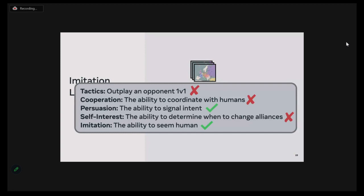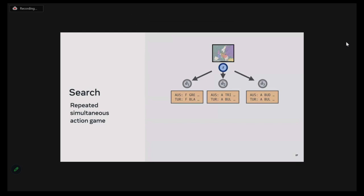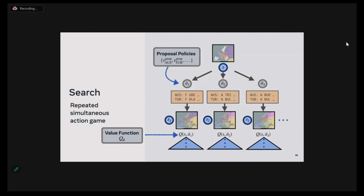An approach we use to improve performance is inference time search. We model the game as a repeated simultaneous action game. In a particular phase, we consider all possible joint actions of the seven players — but there are combinatorially many, so it's not tractable. We first train a proposal policy TAU that identifies the most promising joint action candidates for each player. Then we use the game engine to find the states those actions transition the game to, and evaluate the new state using a value function trained on human data. With the proposal policies and value function, we get a seven-dimensional payoff grid.